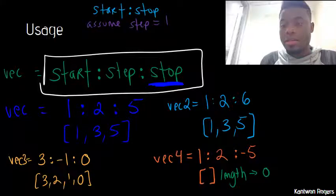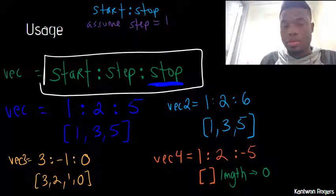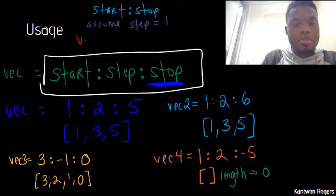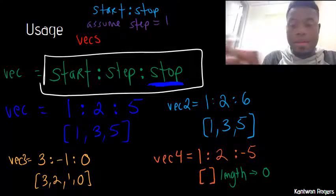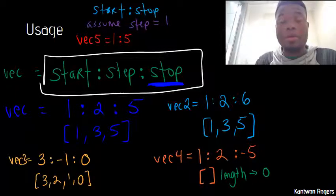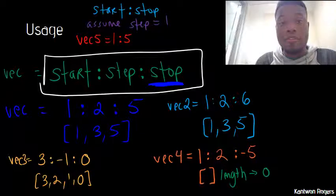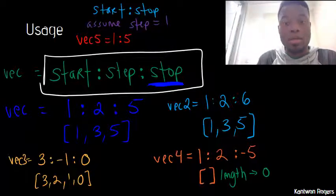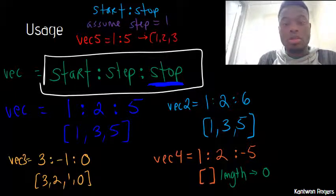So therefore, if I did something like vec 5 is equal to 1 colon 5. This is telling MATLAB I want to start at 1, go to 5, and have steps of positive 1. So therefore, this produces back the vector 1, 2, 3, 4, and 5.